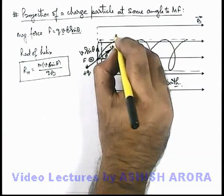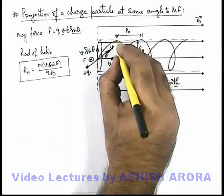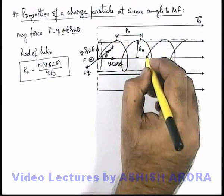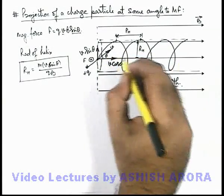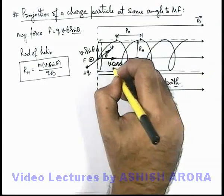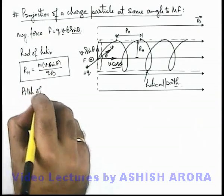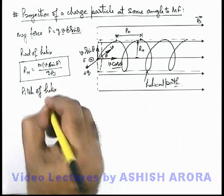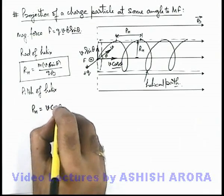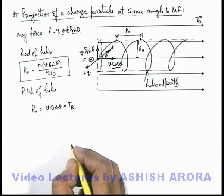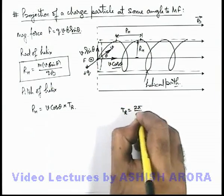Similarly, we can find out the pitch of this helix — that is the distance covered by the particle during one complete revolution. The particle moves along the direction of magnetic field with velocity v cos theta. So we can write the pitch of the helix as p_h = v cos theta multiplied by the time period of revolution. The time period of revolution can be found as 2π divided by omega.